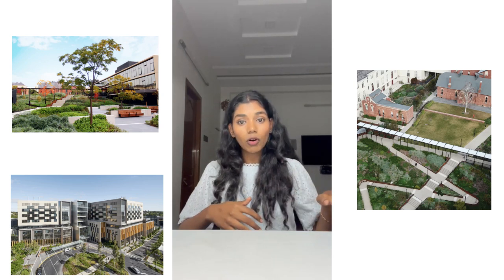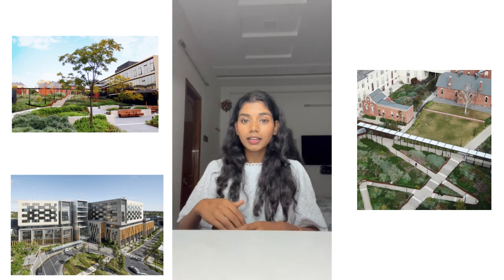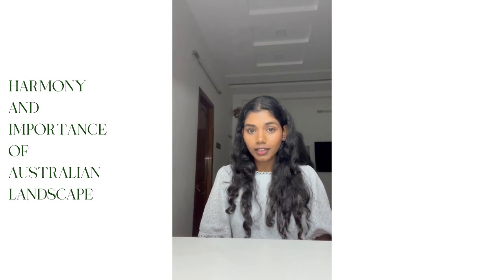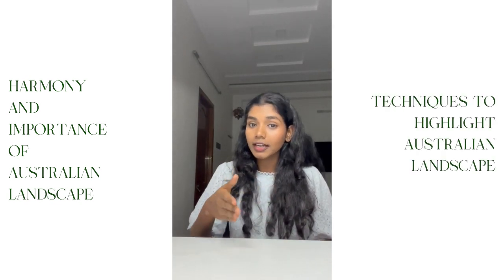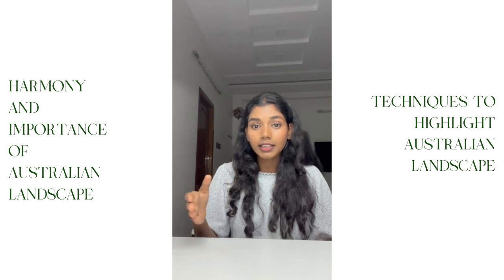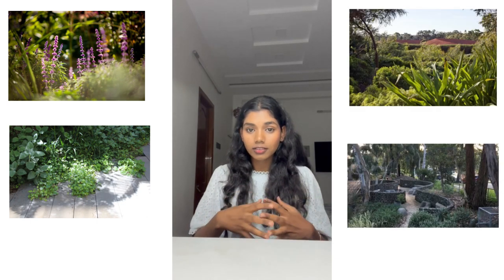We can see this in the walkways, the seating spaces, and the entrance of the building. From both of his projects, we can understand that Paul Thompson is trying to bring harmony and highlight the importance of Australian landscapes. He is always trying to find a technique that highlights the Australian landscape and its plant species. As the horticulture planner and landscape gardener in these projects, he concentrates more on plant species, plant origins, and their location in the design.